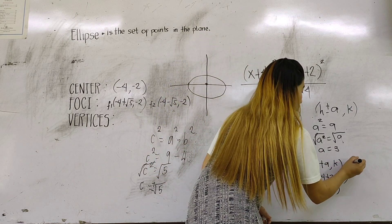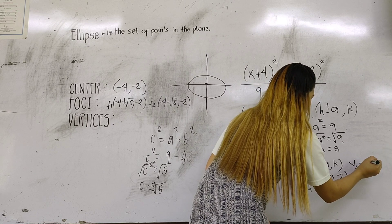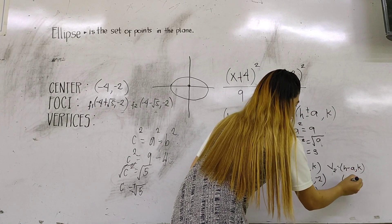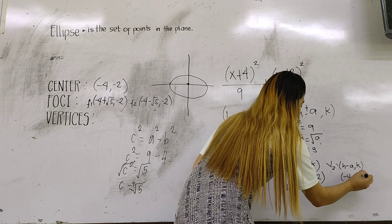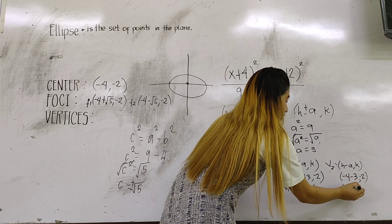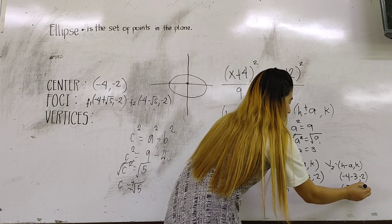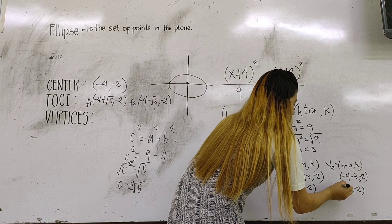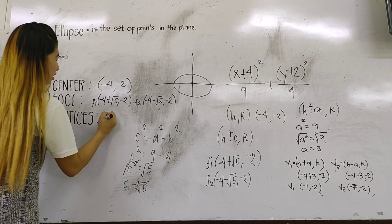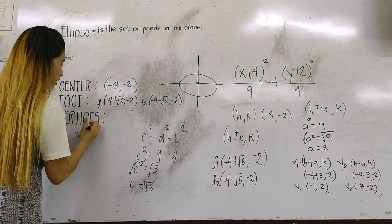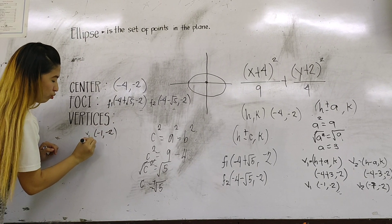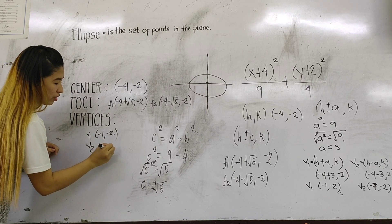For Vertex 2, we use H − A: −4 − 3 = −7, comma K = −2. So Vertex 2 is (−7, −2). If we were to plot these ordered pairs, we could graph the ellipse — but this time, we will not graph it.